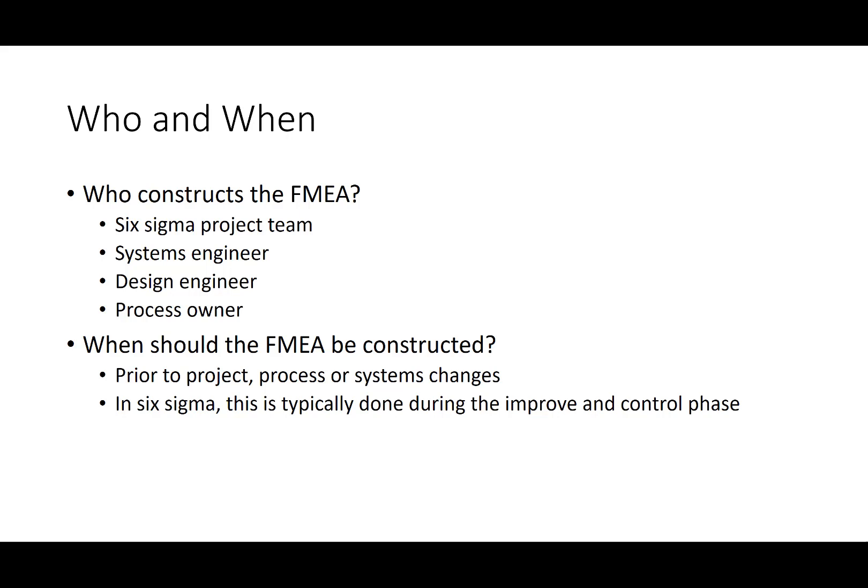When it should be constructed depends on the particular need. For a project, process, or system changes, it's typically most effective if done before implementation. In Six Sigma, this is usually during the improve and control phase — created in the improve phase to assess your risk, and then showing your risk mitigation actions as part of your sustainment planning.